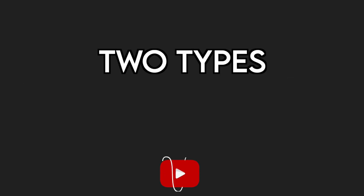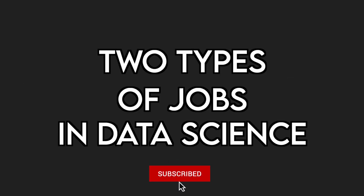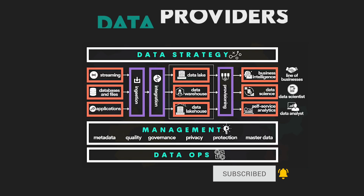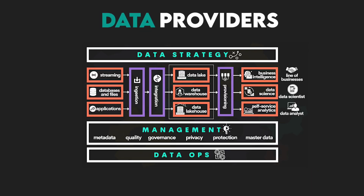Basically, there are two types of jobs in data science: data providers and data users. Data providers deal with taking raw and unstructured data, cleaning it, and storing it so that data users can actually use the data for their analyses.